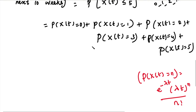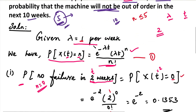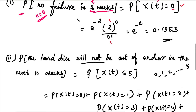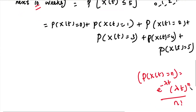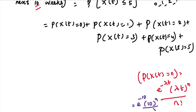In this question, lambda = 1, so we substitute lambda = 1. In the second subdivision, t = 10. Substituting lambda and t into the formula gives e^(minus lambda times t) = e^(minus 1 times 10) = e^(-10), multiplied by (10)^n divided by n factorial. Now we substitute n = 0 for P(X(10) = 0).